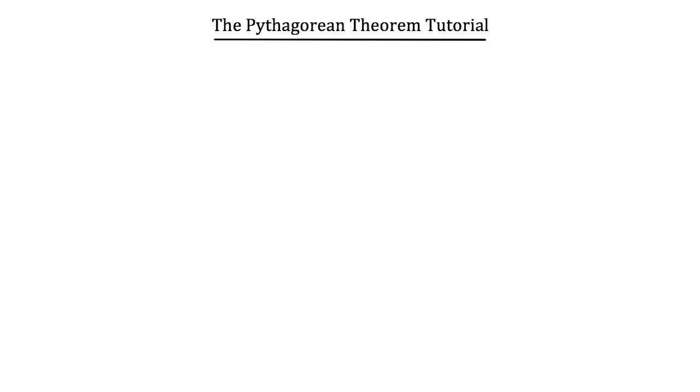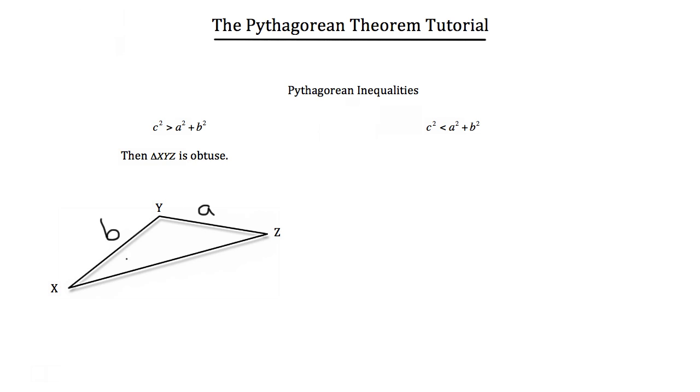Now we're going to talk about Pythagorean inequalities. There are two main Pythagorean inequalities that you should know about. The first one we'll talk about is here on the lower left. What happens if c squared is greater than a squared plus b squared? Can you still have a right triangle? The answer is no. Whenever c squared is greater than a squared plus b squared your triangle is obtuse. So if this were the case for triangle XYZ, then we've got an obtuse triangle and we could say that this were a, this were b, and this were c.